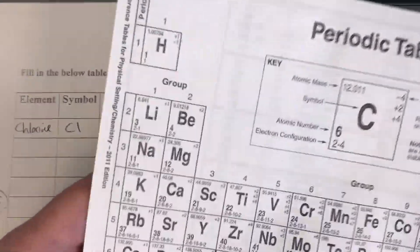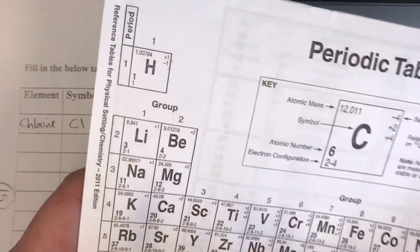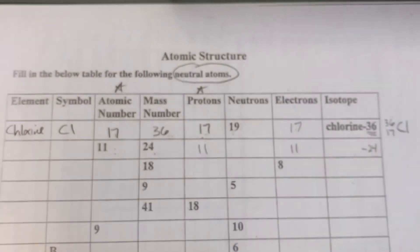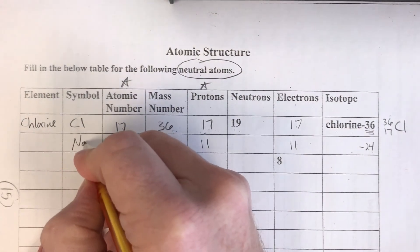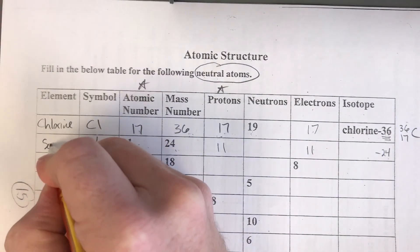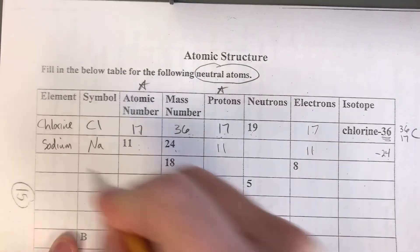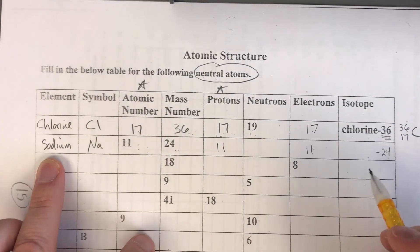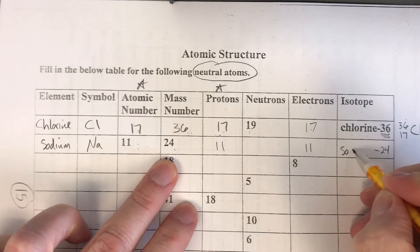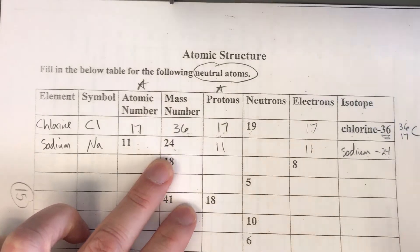We got to go to our reference table. Number 11 is over here, element Na which is sodium. So Na and then we have sodium.